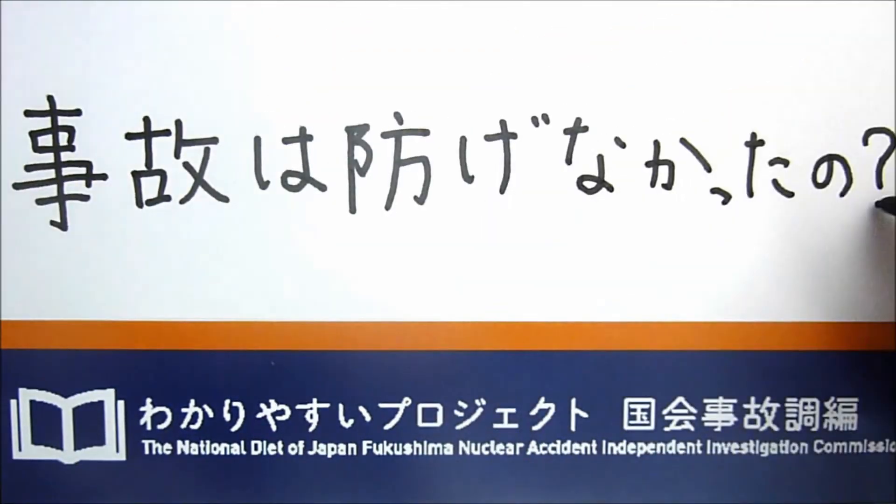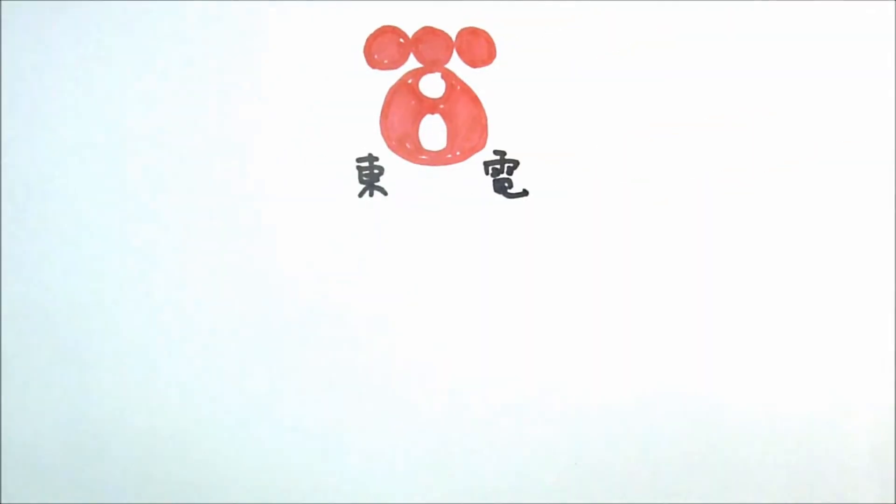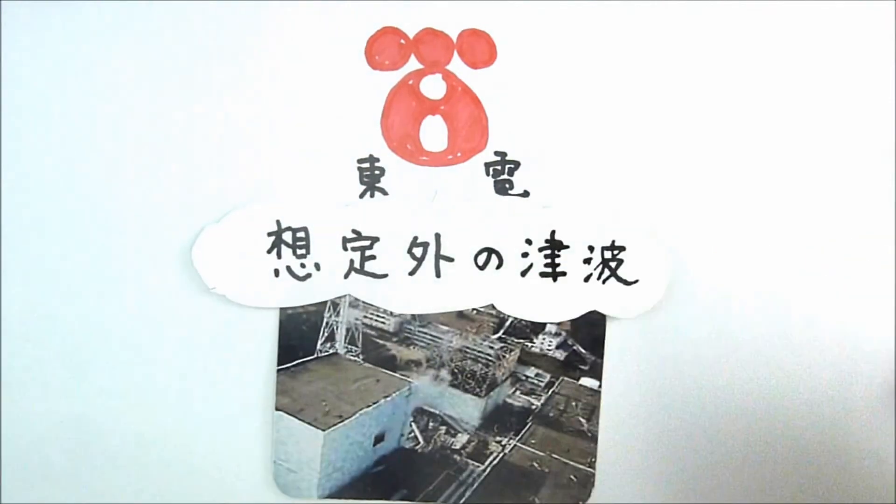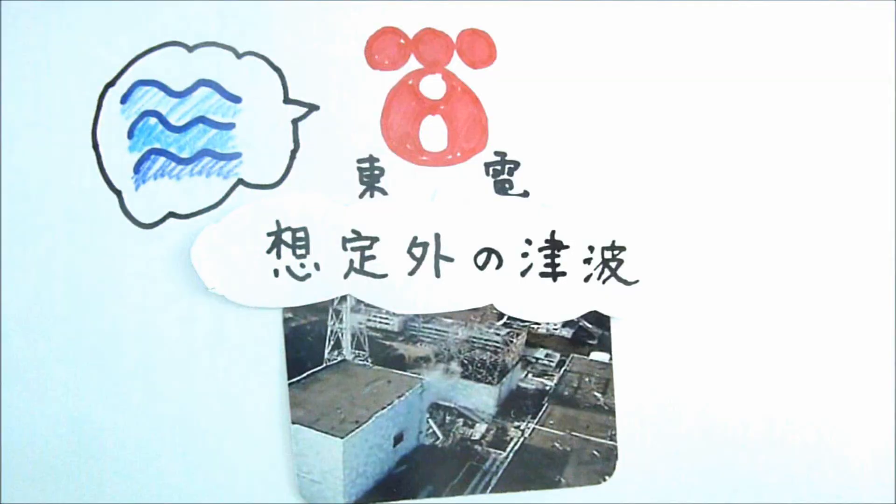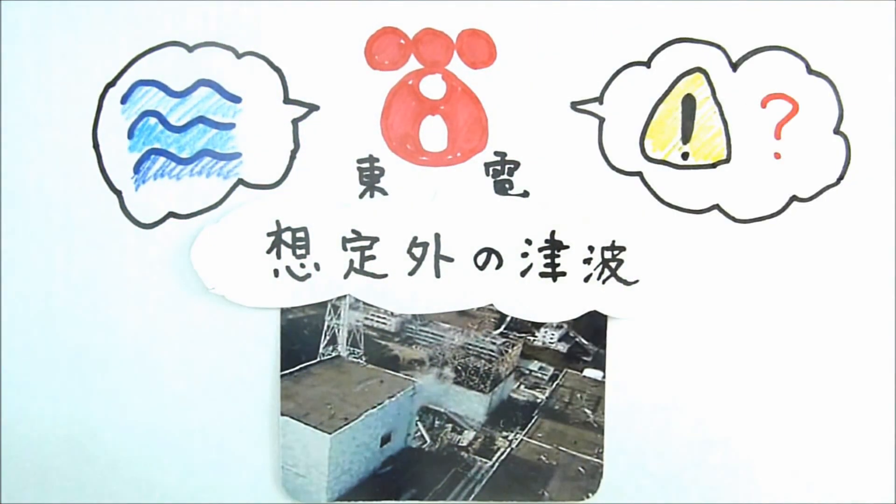Was the nuclear accident preventable? TEPCO originally said the accident was caused by the unexpected magnitude of the tsunami. It blamed the accident entirely on the tsunami and claimed it was unaware of the risks.